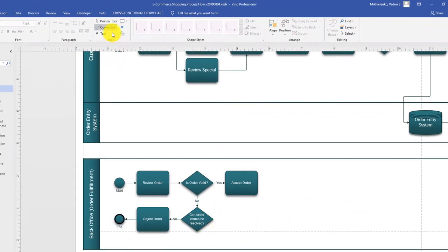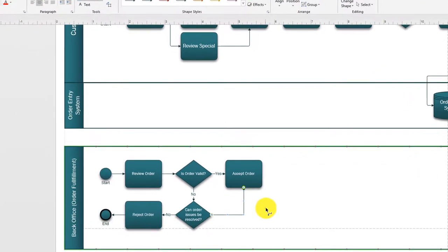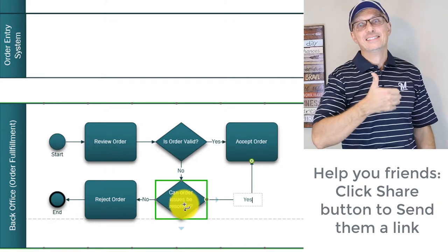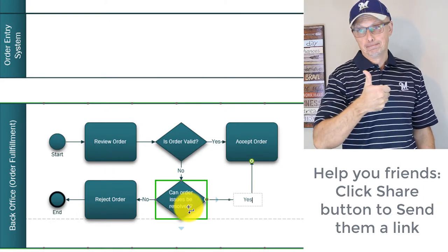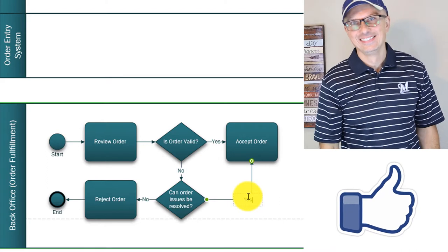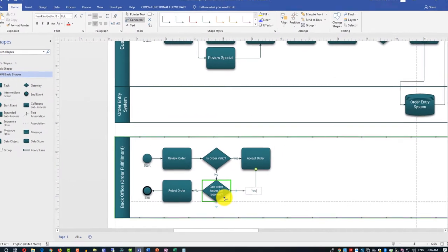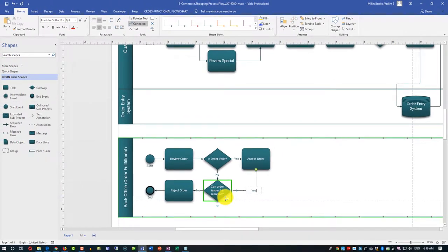I clicked the connector button on the ribbon and dragged the connector for the yes path. If order issues can be resolved by the back office - maybe by contacting the customer, or a typical issue like an item shown available online but not in the warehouse that can be resolved by bringing items into the warehouse - if it can be resolved, yes, we accept the order and move on.